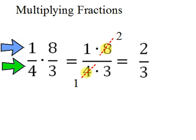So, since there's no more common factors, I'm just going to multiply across the top and across the bottom, which is going to yield 2 thirds, which is what we got the first time.